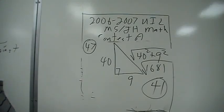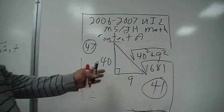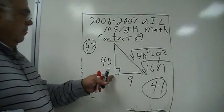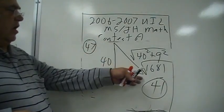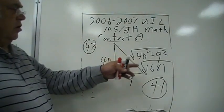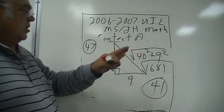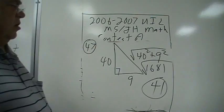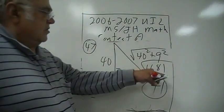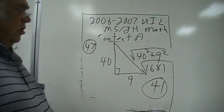All right, for 47, you've got a Pythagorean Theorem problem. You've got 40 and 9 — 40 squared is 1600, 9 squared is 81, that's 1681.